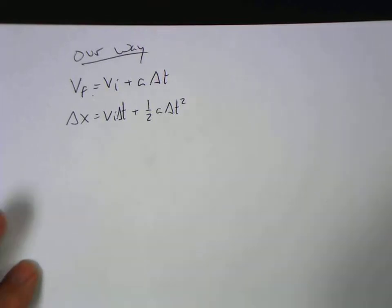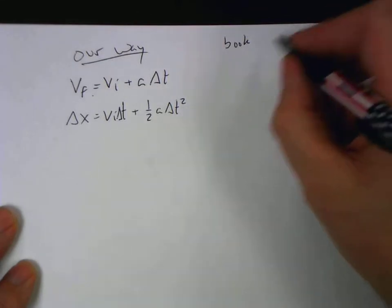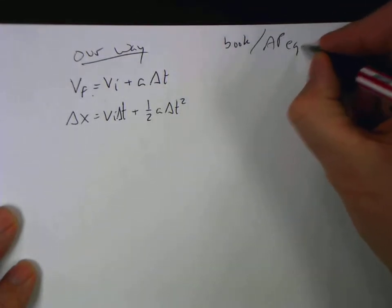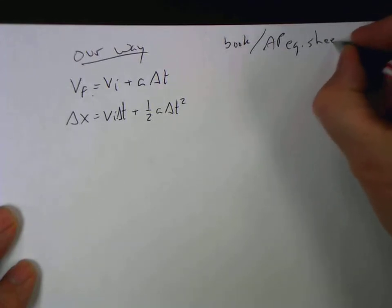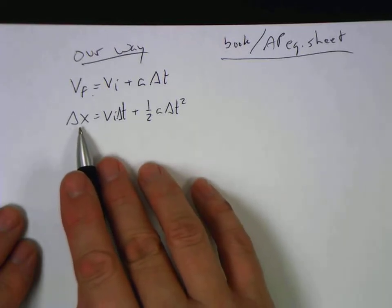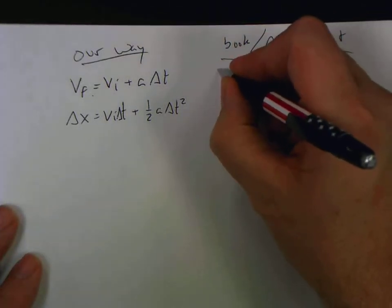Our way of writing it, or at least my way of writing it, and also Flipping Physics, and we have the book rendition of things which is also on the AP equation sheet. I like this way because it is explicit about when is it final, when is it initial, and it is explicit about finding displacement and not position.